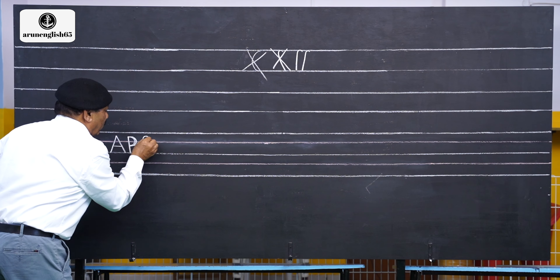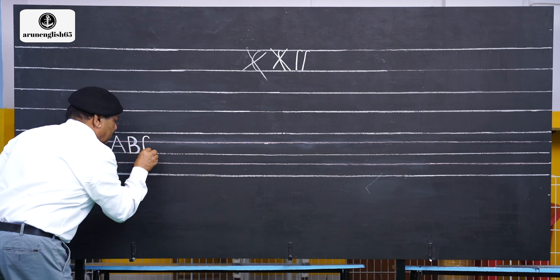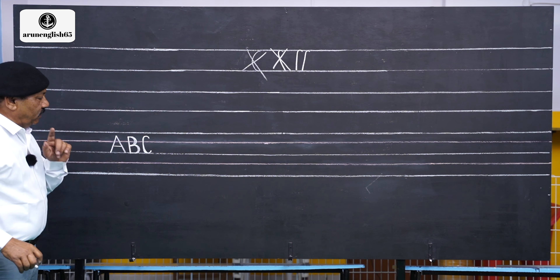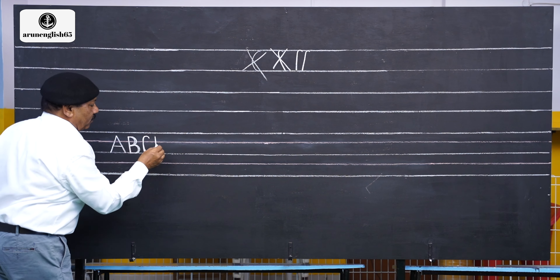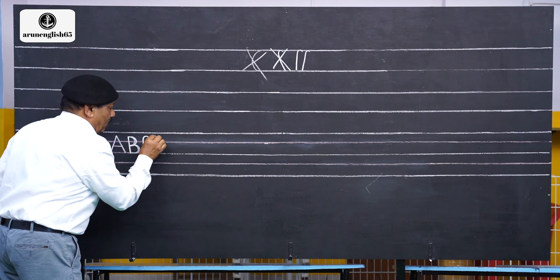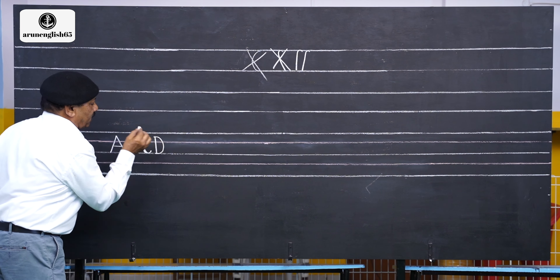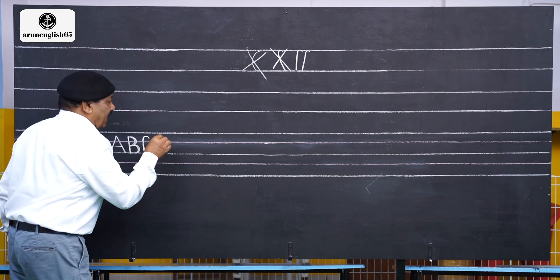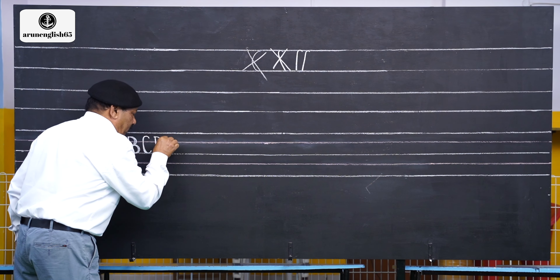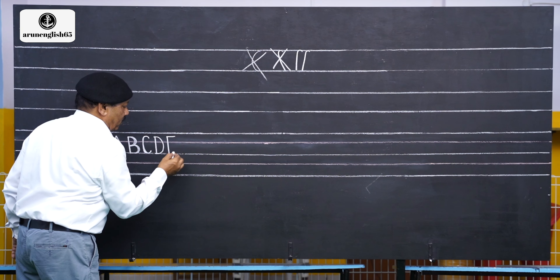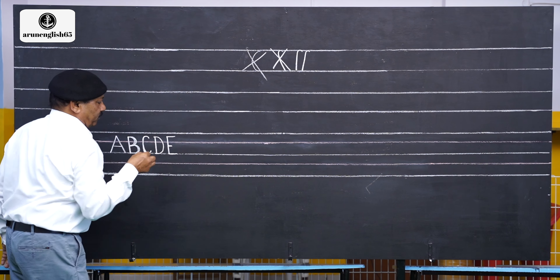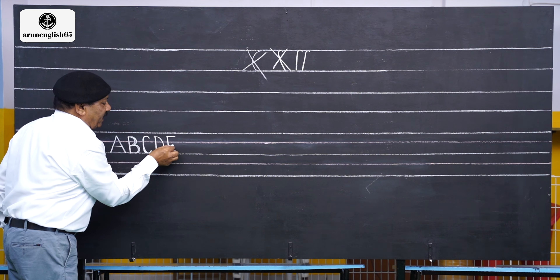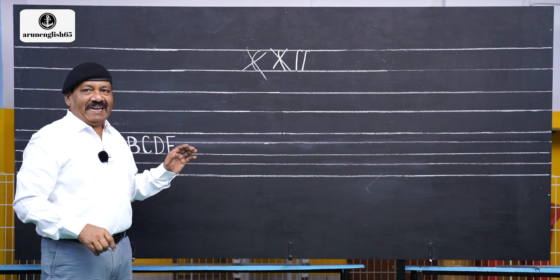C — if you write like this, it is very beautiful. D — draw a line. Keep it to 80% height. This is your D. The upper part stays out nicely. E — keep it to 80% height. Draw the upper line and the lower line. The middle line should be slightly smaller. So if the upper and lower parts of E are small, it looks good. That is E.